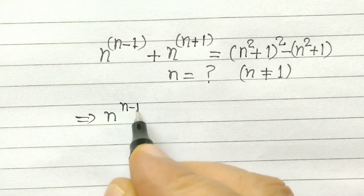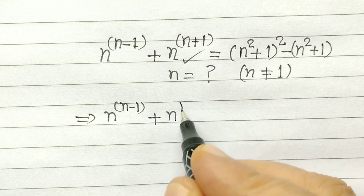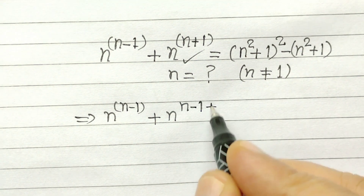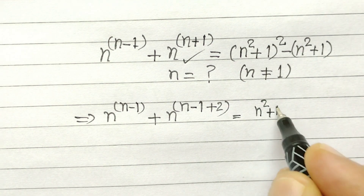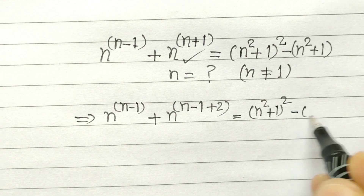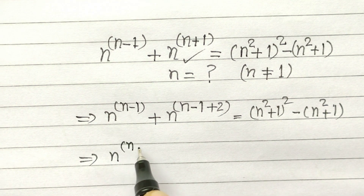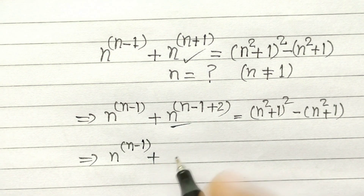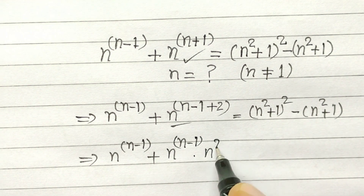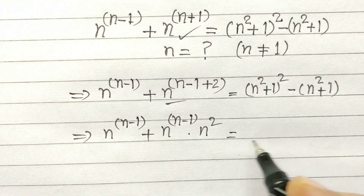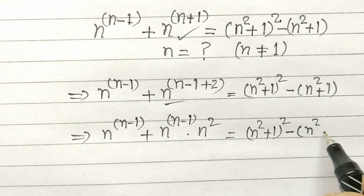n to the power n minus 1. Now we will break this as plus n to the power n minus 1 plus 2, is equal to n squared plus 1 whole square minus n squared plus 1. Now n to the power n minus 1 plus this can be written as n to the power n minus 1 into n squared, is equal to n squared plus 1 whole square minus n squared plus 1.